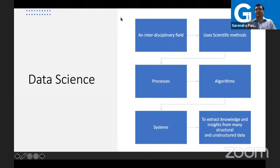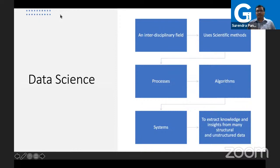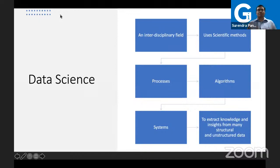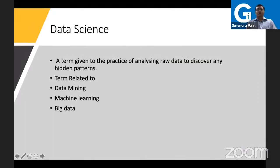Another definition: data science is an interdisciplinary field that uses scientific methods, processing algorithms, and systems to extract knowledge and insight from structured and unstructured data. Structured data is like SQL data; unstructured data could be images, Twitter data, or social media — any data not in a specific format. This term is also connected to data mining, machine learning, and big data.